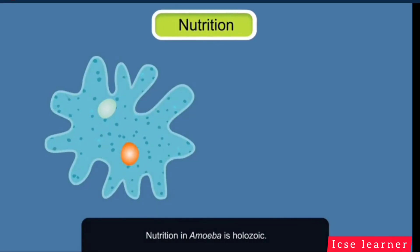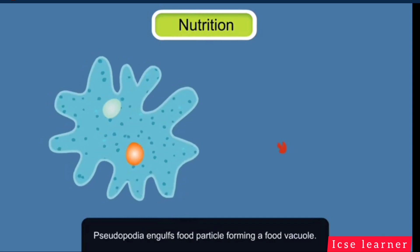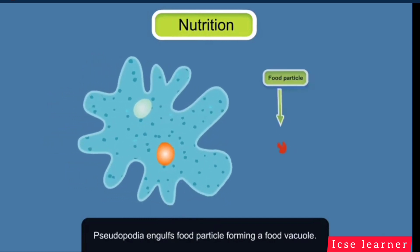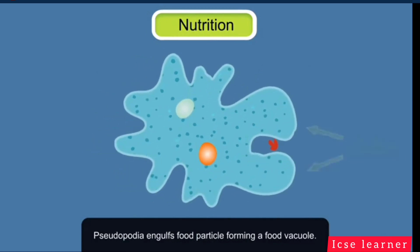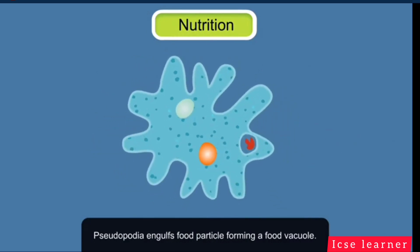Nutrition. Nutrition in amoeba is holozoic. First, the amoeba approaches a food particle. It forms pseudopodia from both ends, which engulf the food, forming a food vacuole.